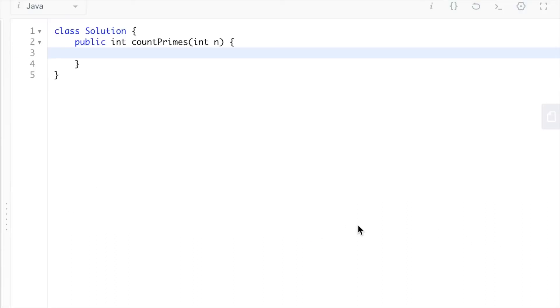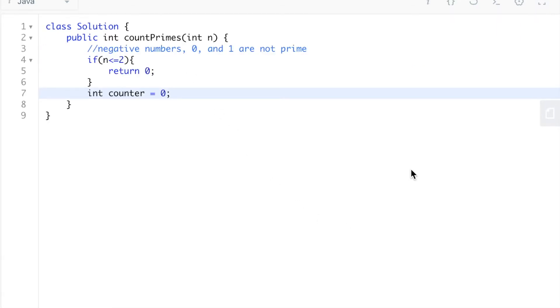Now that we know the basic logic behind figuring out whether or not a number is prime, all we have to do is iterate through each number from 2 all the way up to n and count the number of numbers that are prime. We're going to begin by checking if n is less than or equal to 2, in which case there are going to be no prime numbers. We're also going to set a counter that's going to count the number of prime numbers that we have.